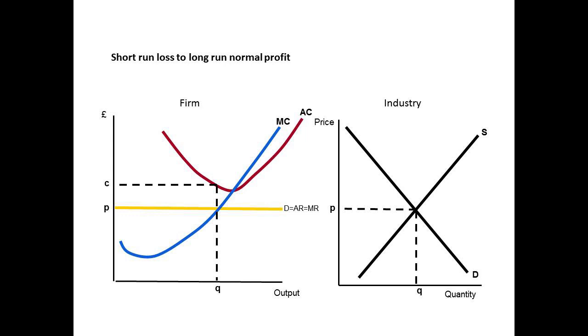That means the overall level of supply in the industry decreases, and so we shift our supply curve up and to the left, giving us quantity Q1 and price P1. Therefore, the price that each firm takes is higher, meaning we shift their demand curve up to be in line with P1, giving us D1 equals AR1 equals MR1.